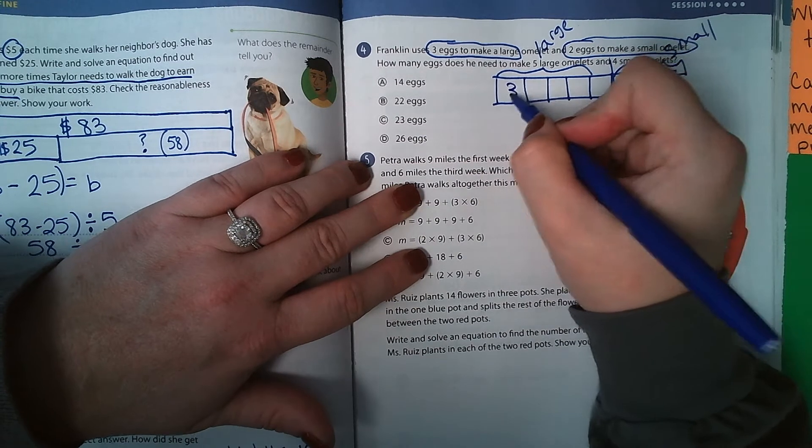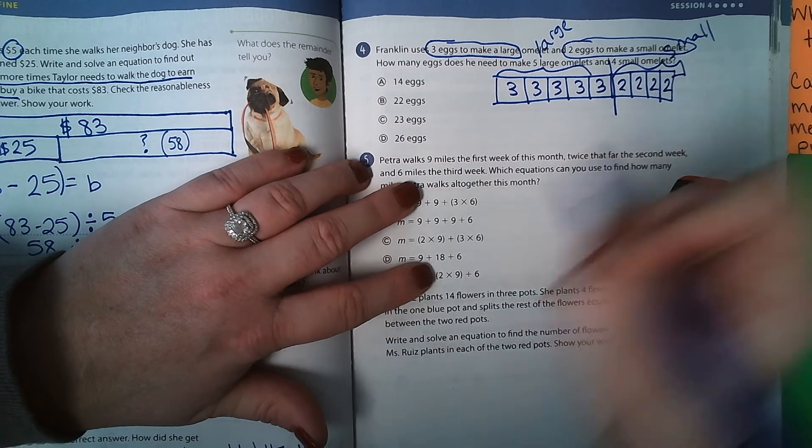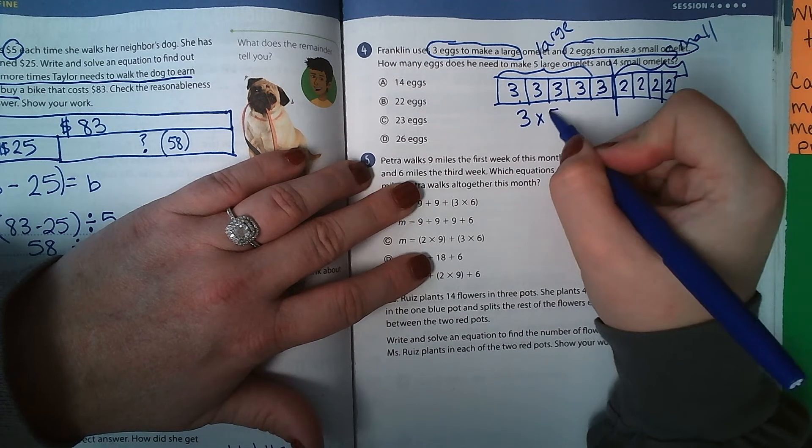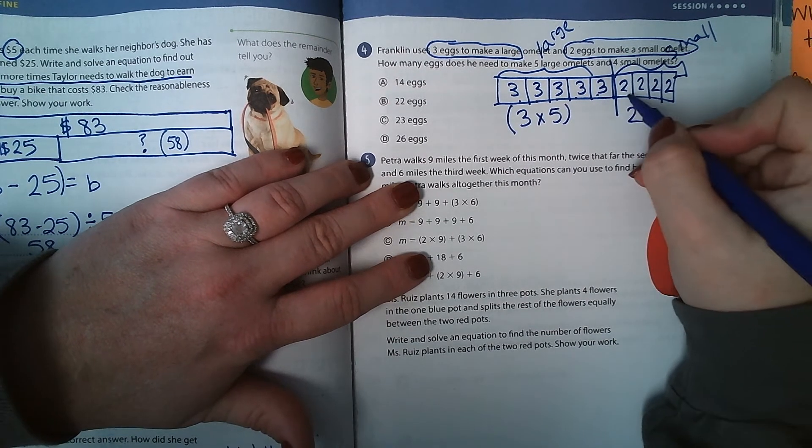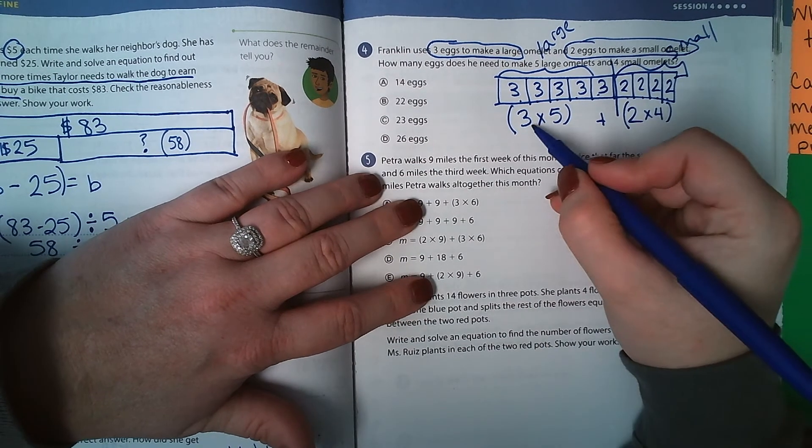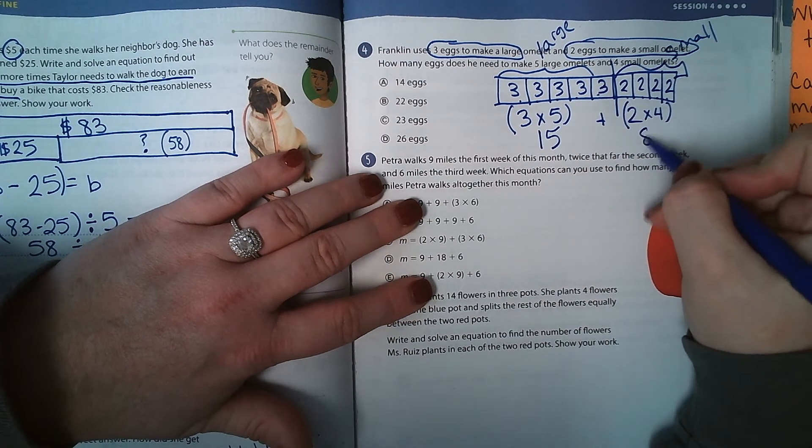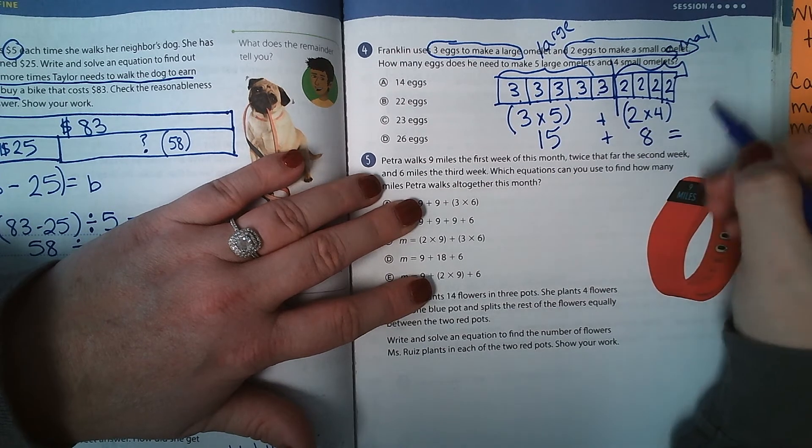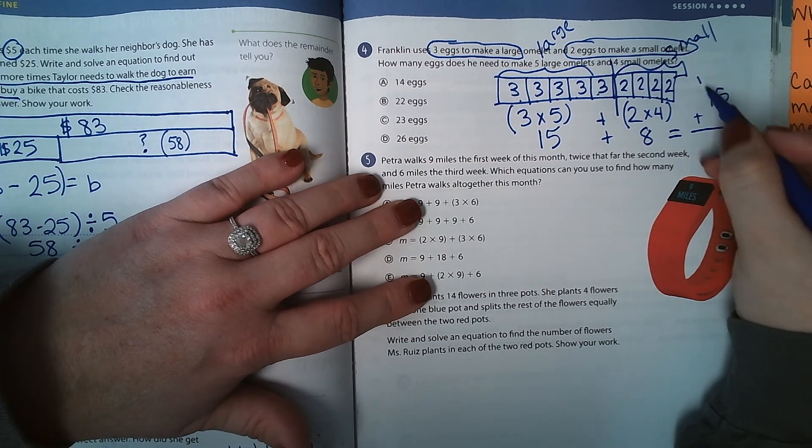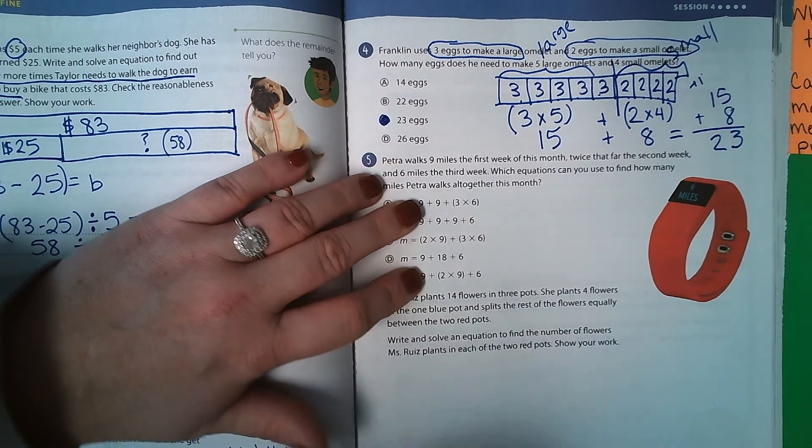He needs 3 eggs for each large and 2 eggs for each small. So, 3 times 1, 2, 3, 4, 5. 2 times 1, 2, 3, 4. And then we need to add them together. So, 3 times 5 is 15, 2 times 4 is 8, and then 15 plus 8, 8 plus 5 is 13, 1 plus 1 is 2. So he needs 23 eggs.